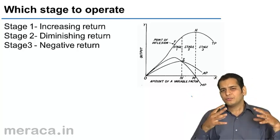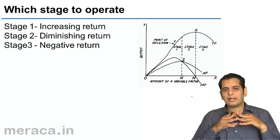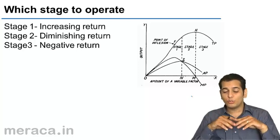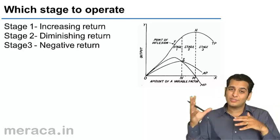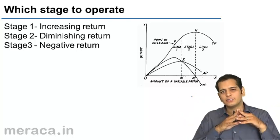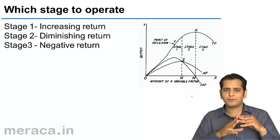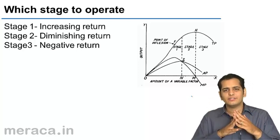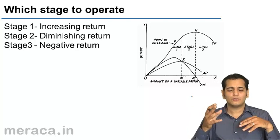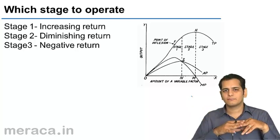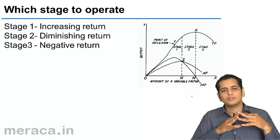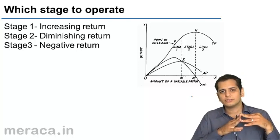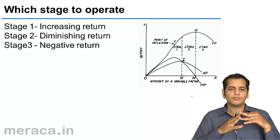Now where do you think would a producer like to be? Would he like to be in stage 1 as production is increasing at an increasing rate in that stage? Or would he prefer to be in the second stage where production is still increasing, though at a diminishing rate? Or some might think the producer would prefer to be in the third stage. Where do you think the producer would prefer to be?